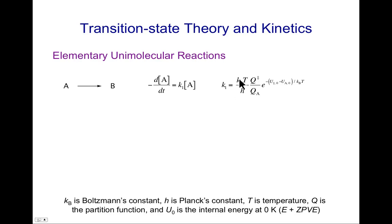Can be determined as Boltzmann's constant times temperature divided by Planck's constant times the partition function for the transition state divided by the partition function for the reactant, exponential minus the energy difference between the transition state structure and the reactant, all divided by KT. And included in that internal energy U is the zero point vibrational energy.